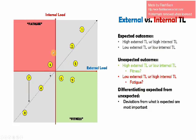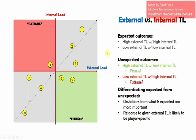So we decided that it wasn't so much the quadrants that were important — it's deviations from this expected line. Also, this internal load response is going to be specific to an individual. As a basic example, an external load of 3000 meters for an athlete who generally covers around five or six kilometers in a session is going to be much less taxing for that player than another player who generally only covers two kilometers per session. This sort of led us to thinking that tracking this relationship within individuals is going to be more useful.